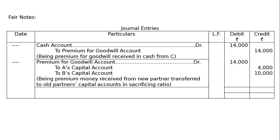Journal is to be totaled at the end, that is Rs 28,000, both debit and credit columns. And this is the final answer.